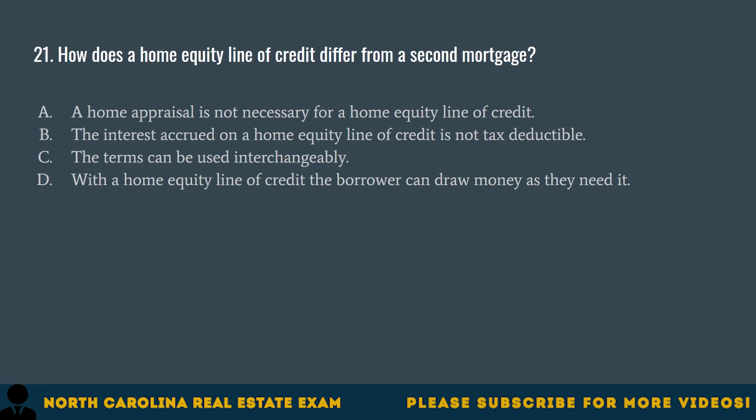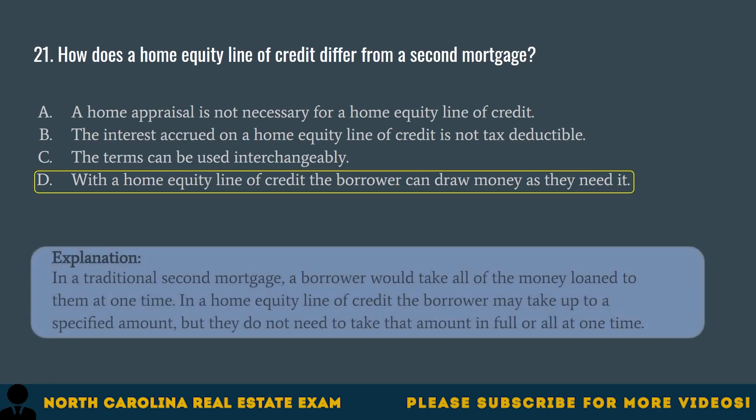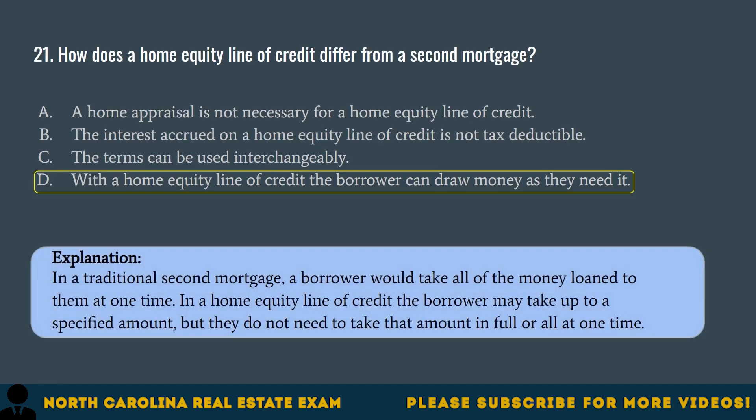Question 21. How does a home equity line of credit differ from a second mortgage? A. A home appraisal is not necessary for a home equity line of credit. B. The interest accrued on a home equity line of credit is not tax deductible. C. The terms can be used interchangeably. D. With a home equity line of credit, the borrower can draw money as they need it. The correct answer is D. In a traditional second mortgage, a borrower would take all of the money loaned to them at one time. In a home equity line of credit, the borrower may take up to a specified amount, but they do not need to take that amount in full or all at one time.